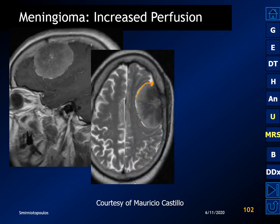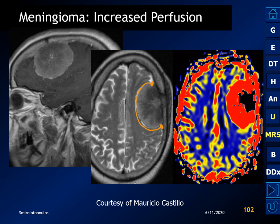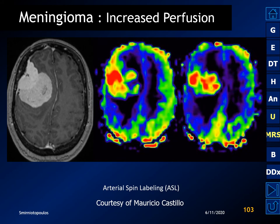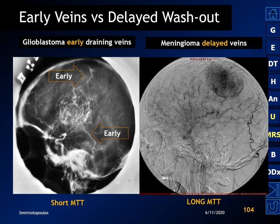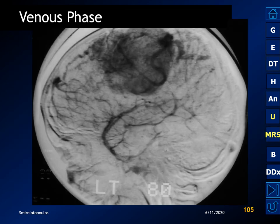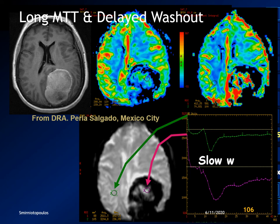On perfusion imaging we see an incredibly hot tumor with dramatically increased cerebral blood flow. Comparing a glioblastoma multiforme with a meningioma, we notice in the meningioma a delayed appearance of veins, a prolonged capillary phase — the tumor blush — and in the venous phase, persistence of contrast material within the tumor capillaries, very different from most hypervascular tumors. Curves demonstrate very slow washout — a distinctive characteristic suggesting a meningioma.